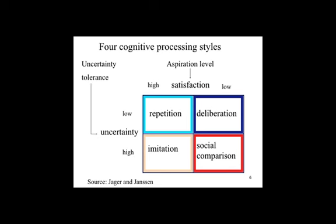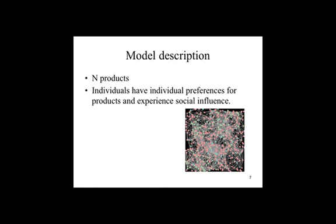During the simulation, an agent can use different heuristics depending on the satisfaction and uncertainty about the current situation. We will now describe a model which is an illustration of the CONSOMAT approach. There are a number of products available for the agent, and the agents are connected in a social network as illustrated in the figure. Agents will have individual preferences and are sensitive to social influence. We will explore the consequences of different assumptions of social influence, aspiration, and uncertainty tolerance on the dynamics of the model.